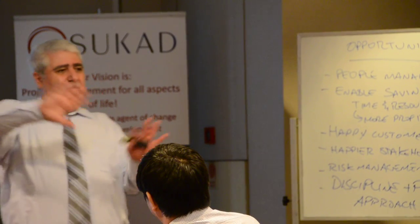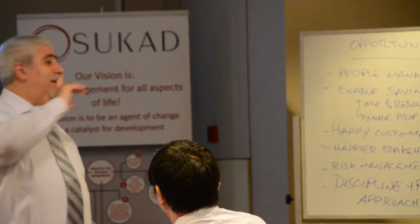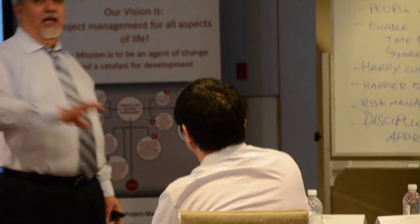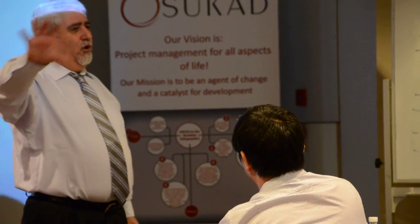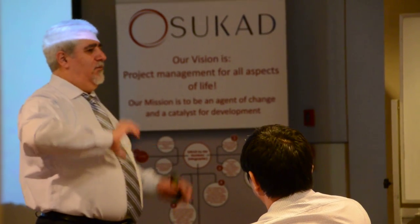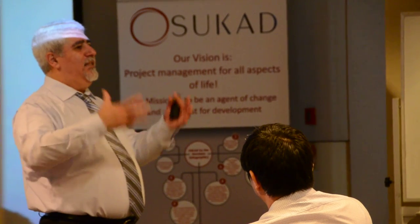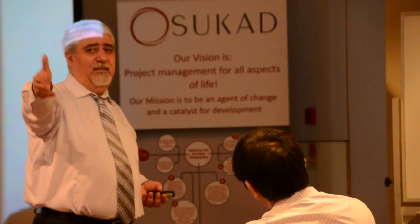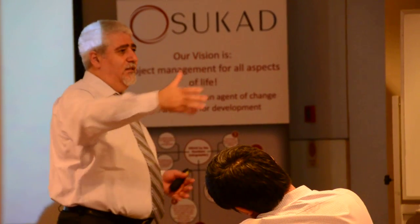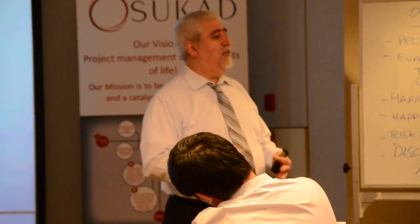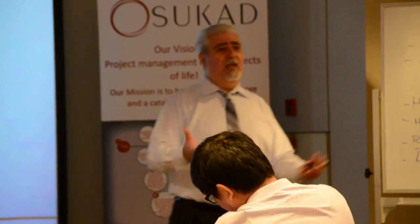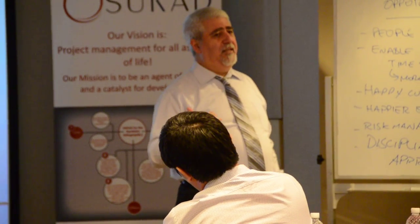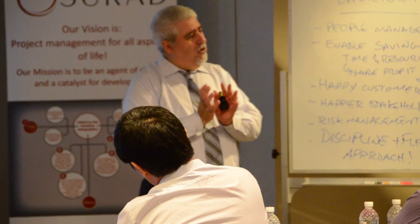In an ideal world, the PMO should own OPM. OPM is about systems, procedures, guidelines — the processes, the people, the policies, the governance. OPM covers all of these things: how to manage a product, how to manage a program, how to manage a portfolio, how to prioritize projects in an organization, and how to make decisions.